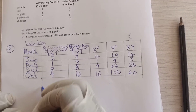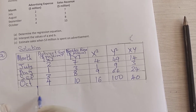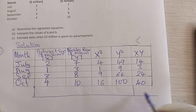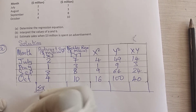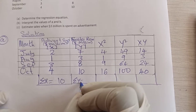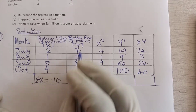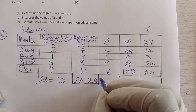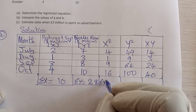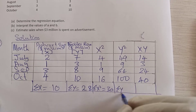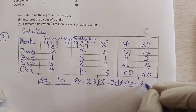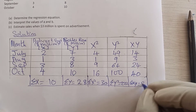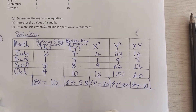Now find the totals. Σx = 10, Σy = 28, Σx² = 30, Σy² = 222, and Σxy = 81. Add all those columns up to get each sum.